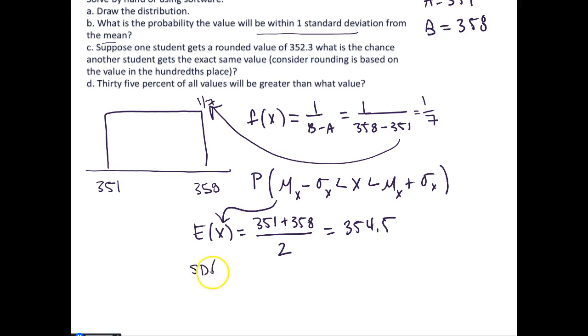The standard deviation of X is equal to the square root of the variance of X. For a uniform distribution, the variance is (b - a)^2 / 12, so that's (358 - 351)^2 / 12. If we take the square root of this, we get the standard deviation: square root of 49/12, which equals 2.02.